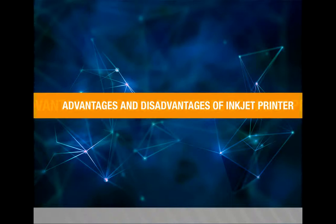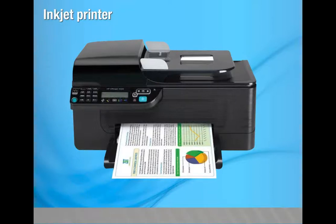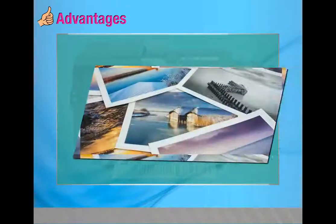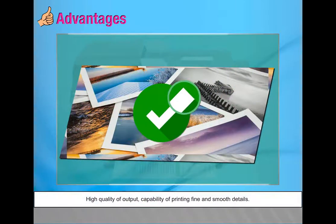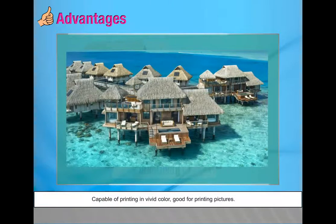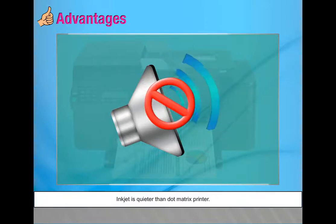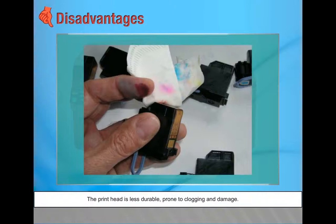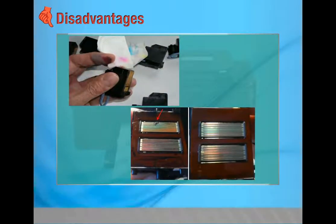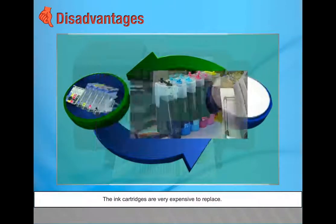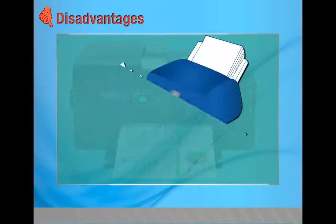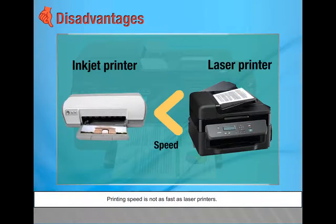Advantages of inkjet printer: low cost and easy to use; high quality output; capability of printing fine and smooth details; capable of printing in vivid color; good for printing pictures; inkjet is quieter than dot matrix printers. Disadvantages: the print head is less durable and prone to clogging and damage; ink cartridges are very expensive to replace; not good for high-volume printing; printing speed is not as fast as laser printers.